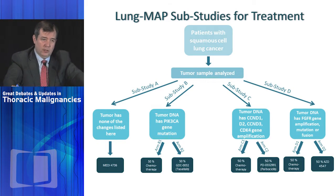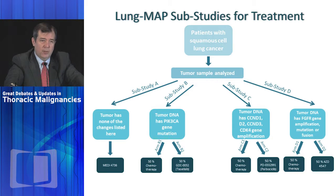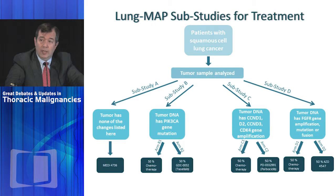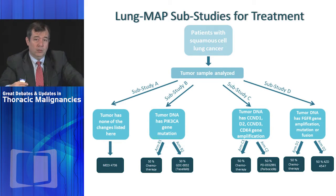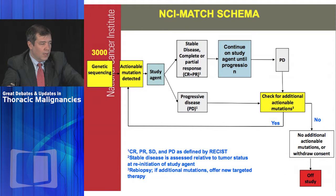The new version of the Lung MAP trial takes away the randomization for patients without a match and allows patients with third-line squamous cell lung cancer who've previously had nivolumab to enroll. Many of the randomizations are going to go away in the next version, which will instead look for signals for individual biomarkers. That's the Lung MAP program for squamous cell lung cancer.